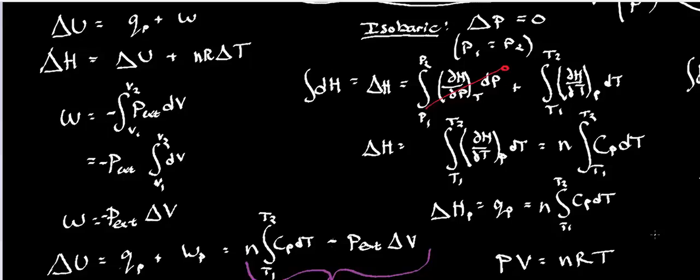In the last two videos, we looked at how to calculate work, heat, internal energy, and enthalpy for isothermal and isochoric processes. In this video, we're going to do the same thing, but instead for what's called an isobaric process.